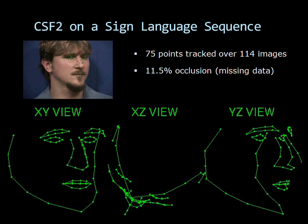We now consider a face close-up video sequence of a sentence in American Sign Language. 75 facial points were manually marked over 114 images, but only when visible. Due to natural occlusion, 11.5% of the points are missing. The reconstructed 3D shapes are shown in three views.